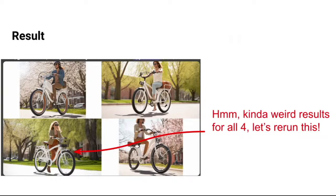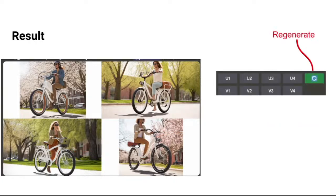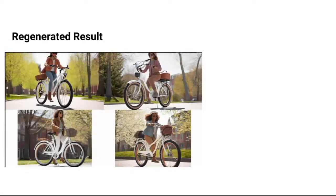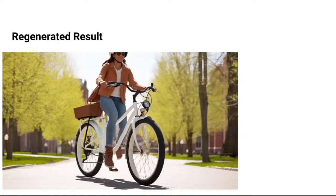Image generation has gotten much better over the last year, but things like hands are still a real problem. Some other details too — you look closely and she's not quite on the bike. We wondered if it was a side-saddle technique. We regenerate again — similar to ChatGPT, anytime you're not happy just have it do it again. All we really need is one promising one. She's on the bike, the bike looks right, green trees — close enough. It's a prototype. Ship it.